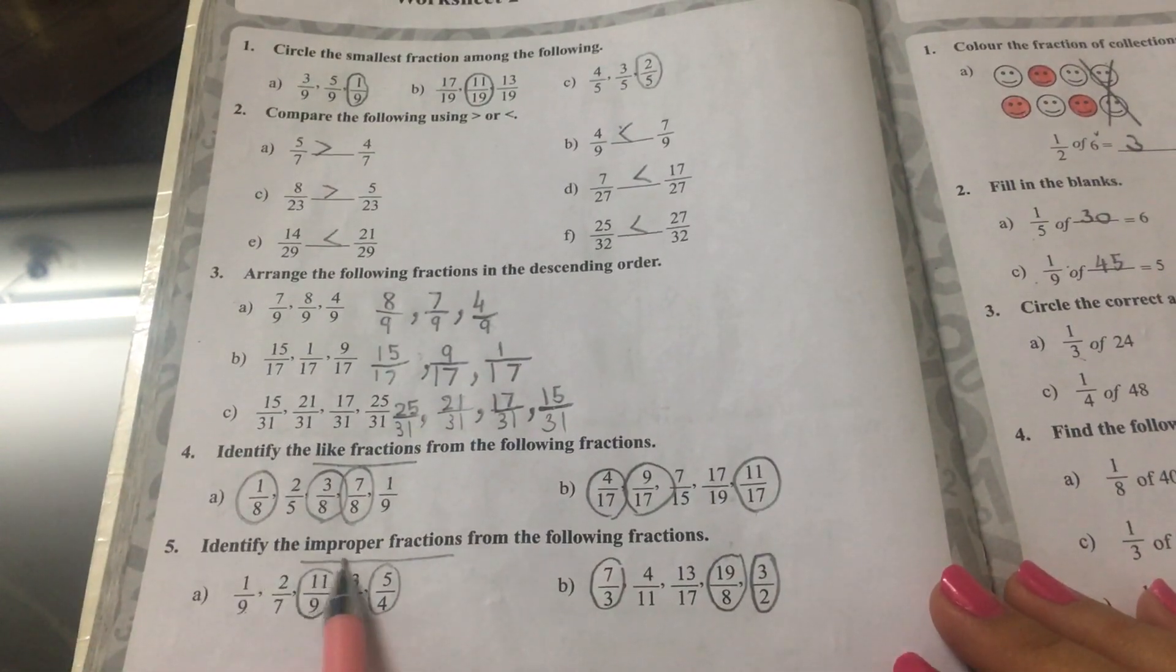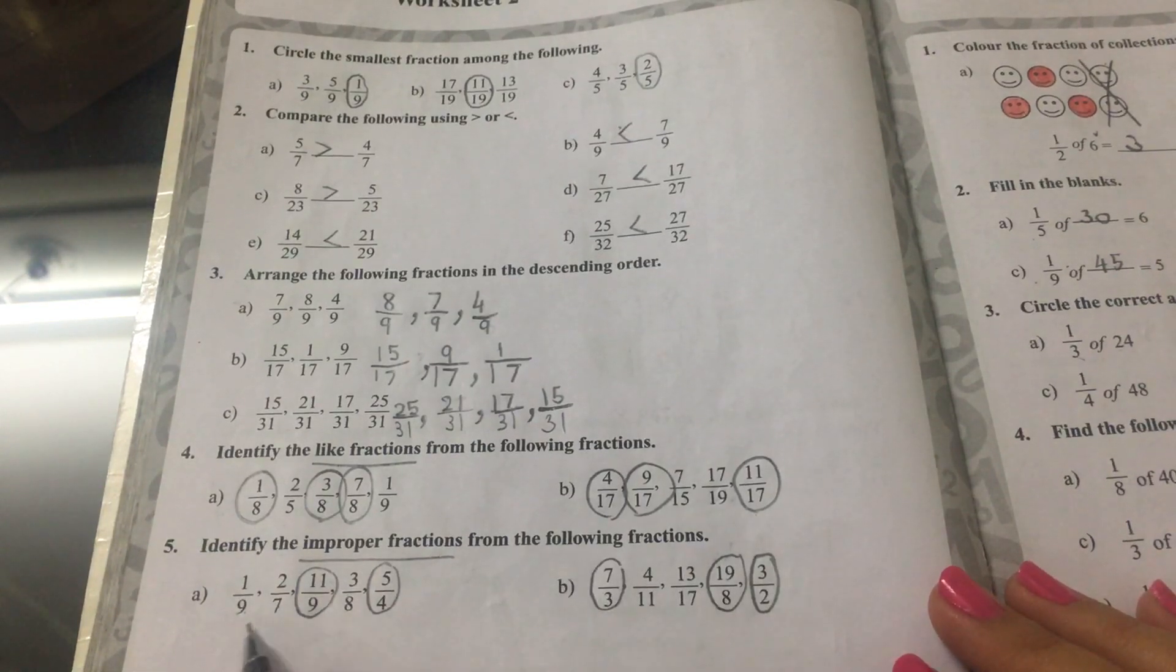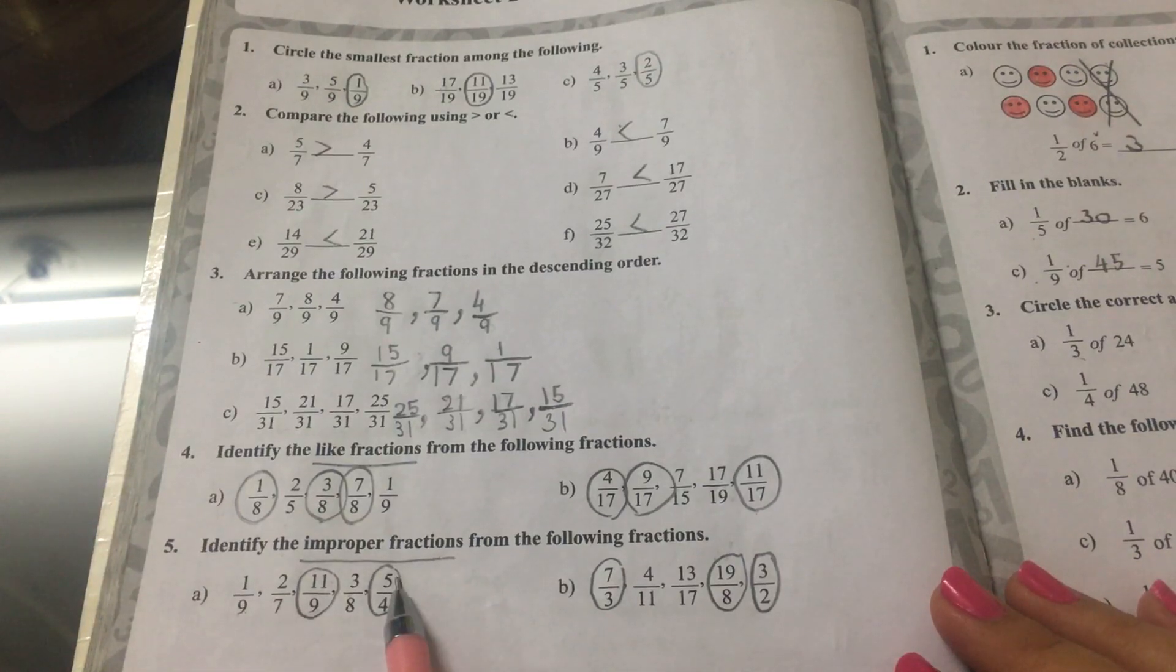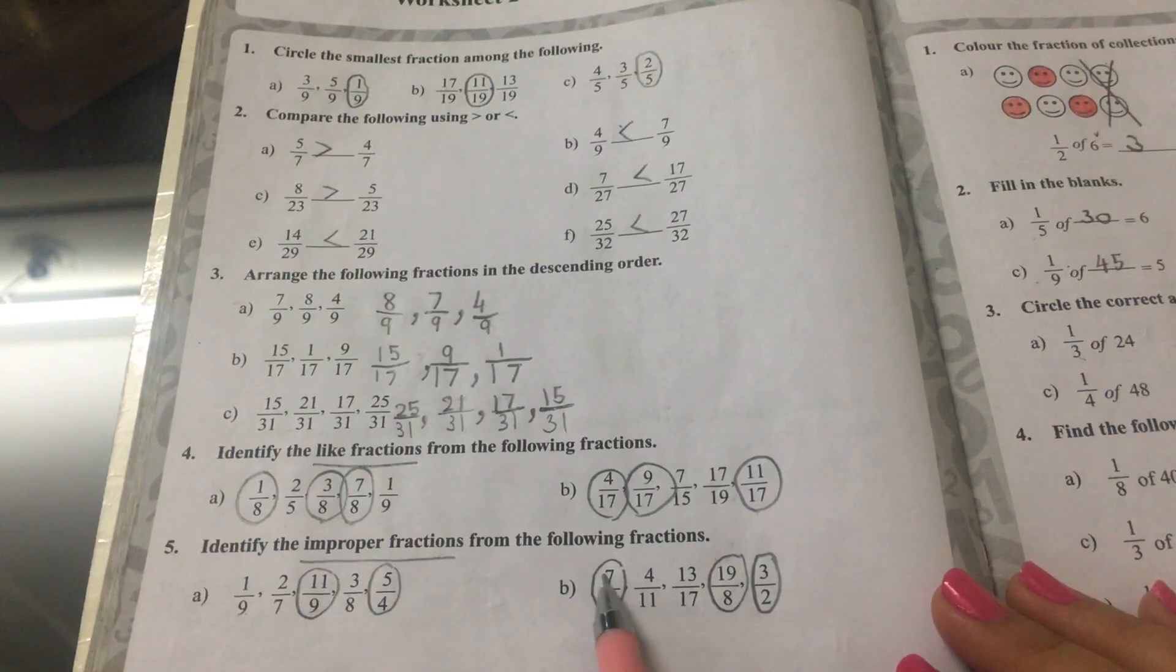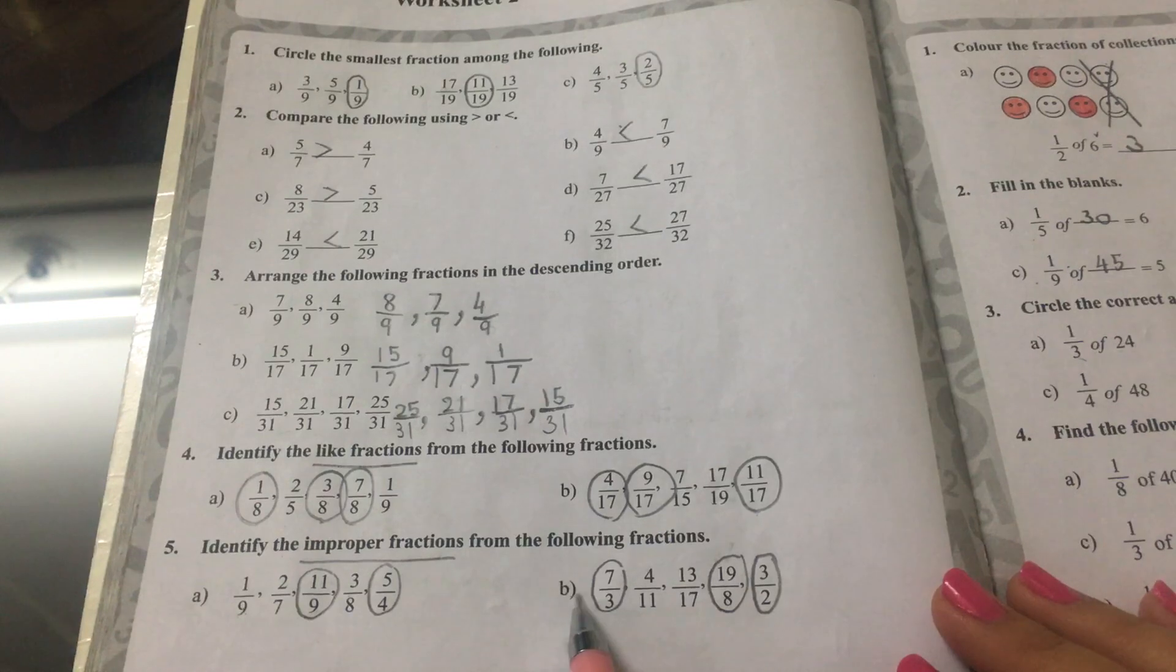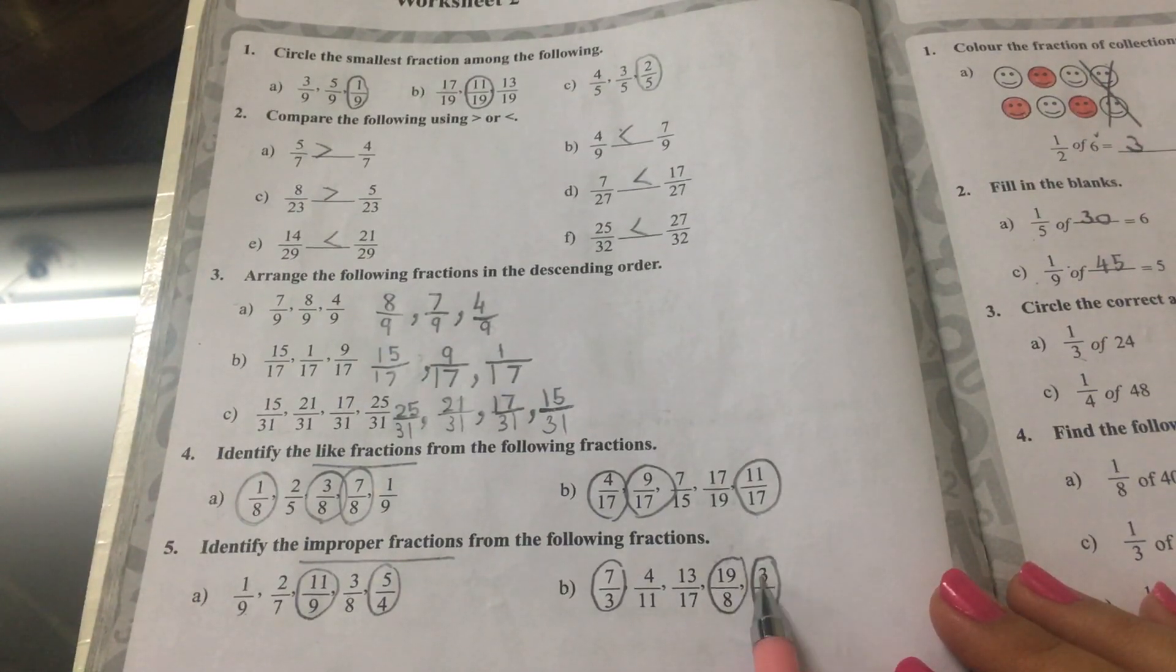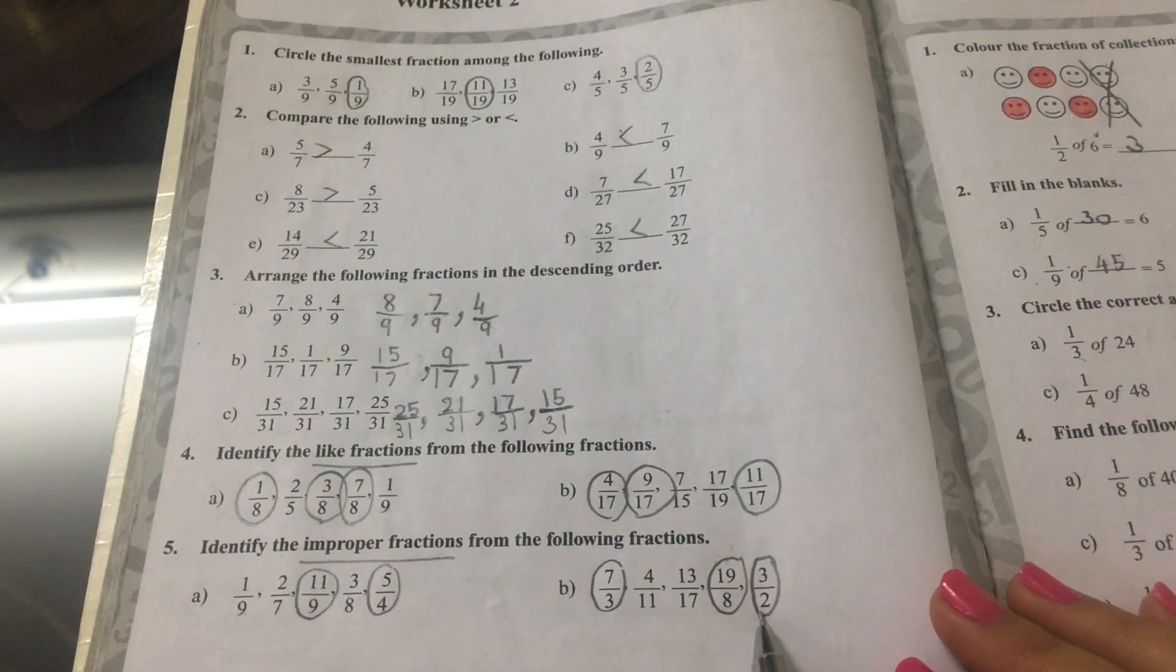Question 5. Identify the improper fractions from the following fractions. So they are 11 ninths, 5 fourths, and for B the answer is 7 thirds, 19 eighths, 3 halves.